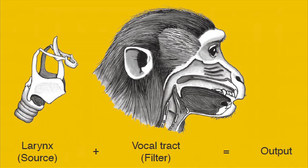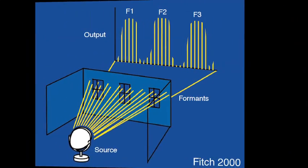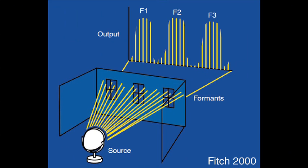This evolutionary feedback loop makes it necessary to understand sound production mechanisms when studying animal communication. Sound waves generated by vocal fold vibration in the larynx pass through the vocal tract, which contains air in the pharyngeal, oral, and nasal cavities, amplifying certain frequencies termed formant frequencies or formants, before radiating into the environment.